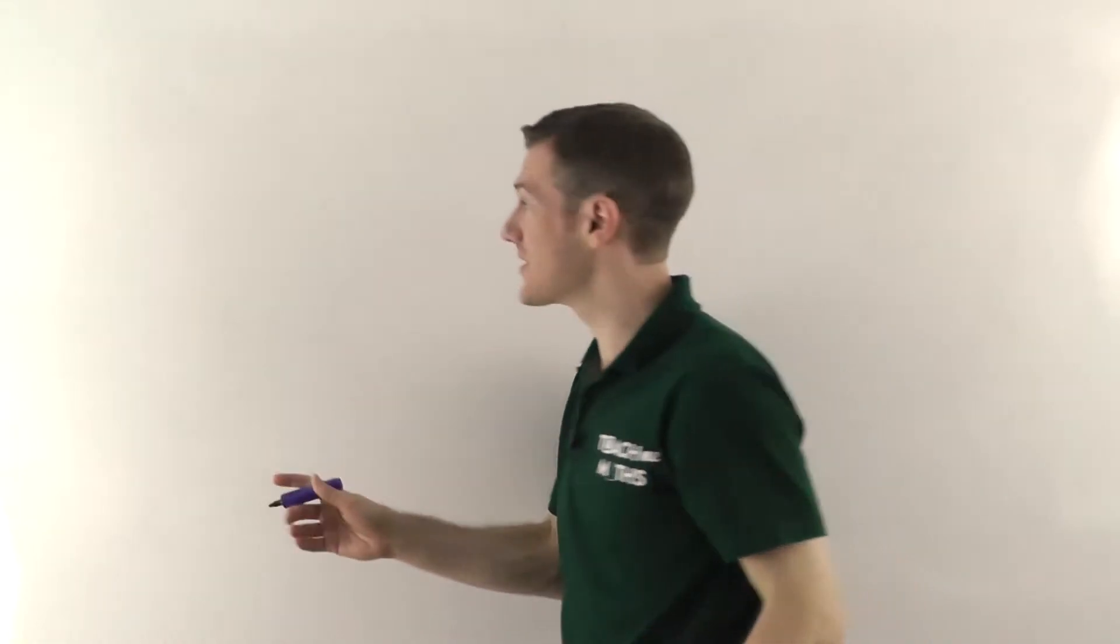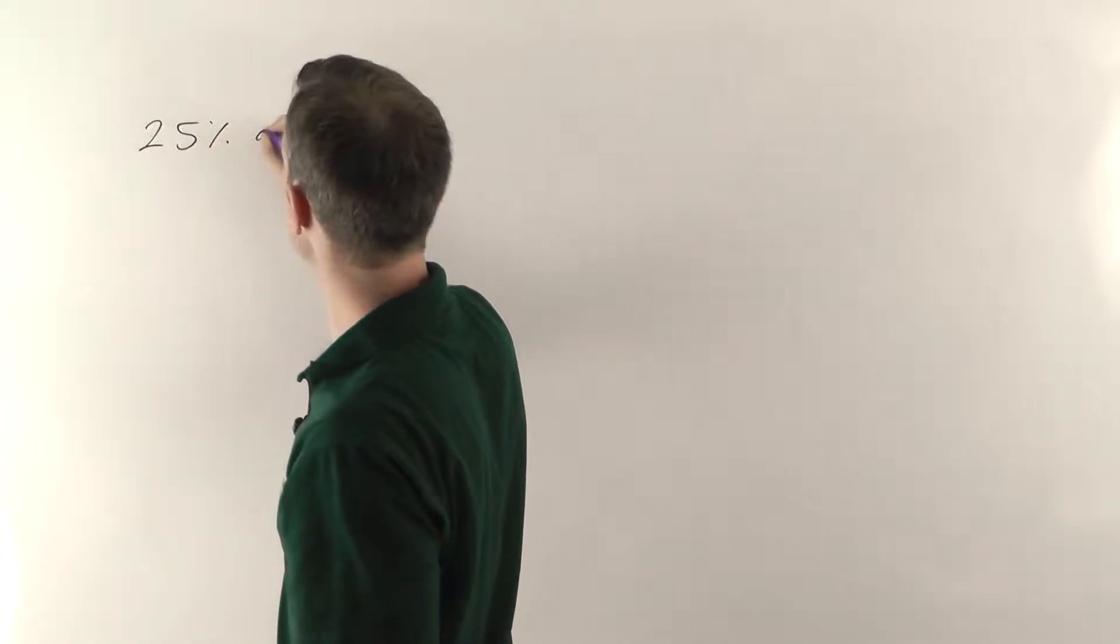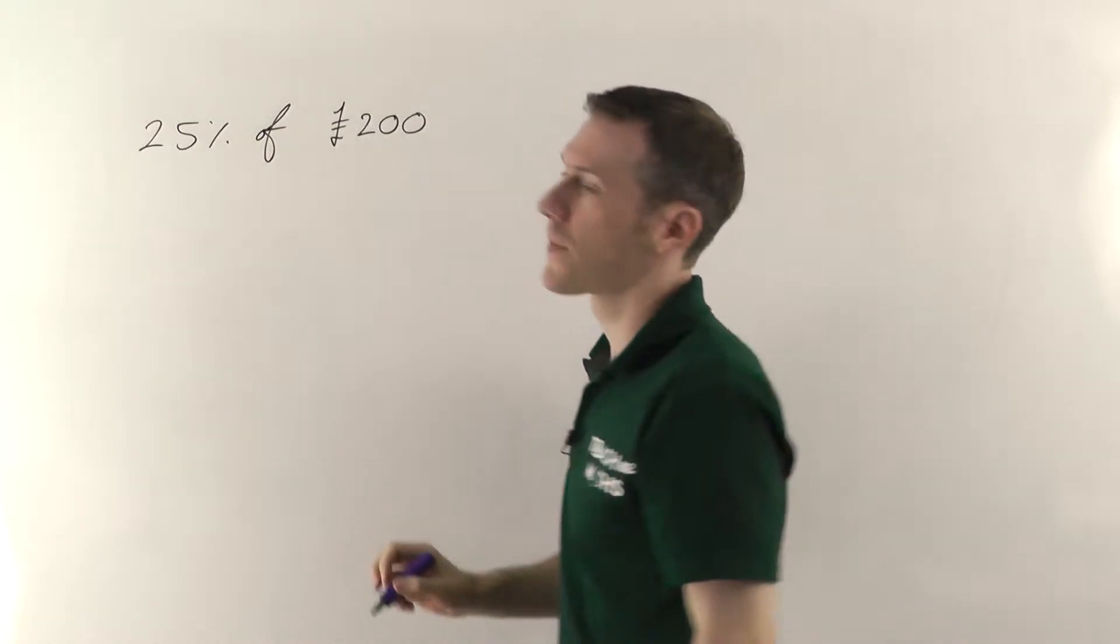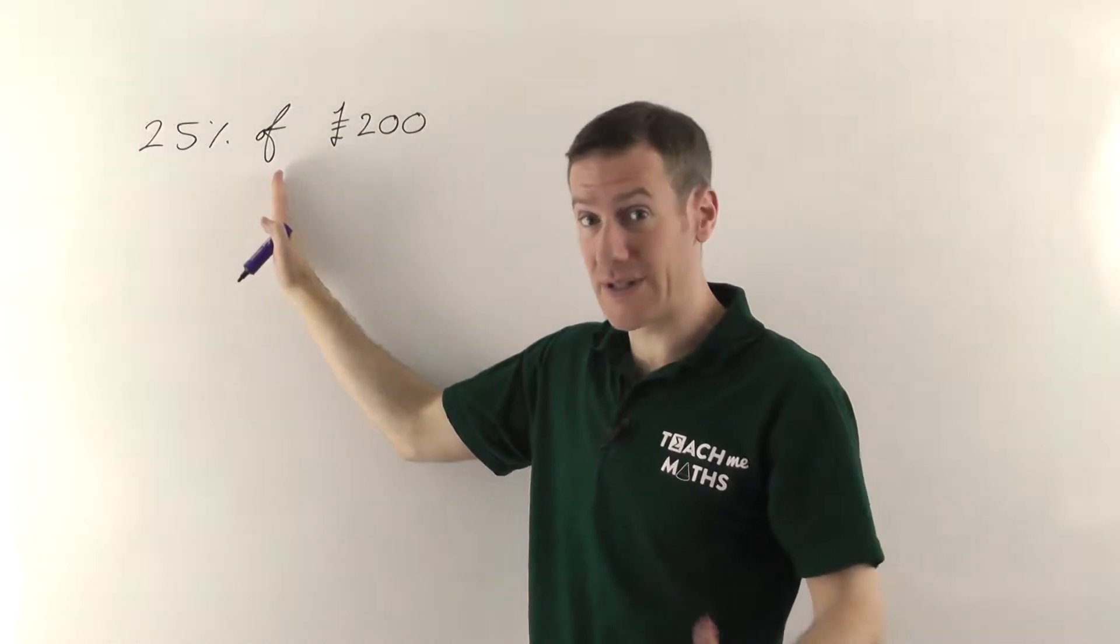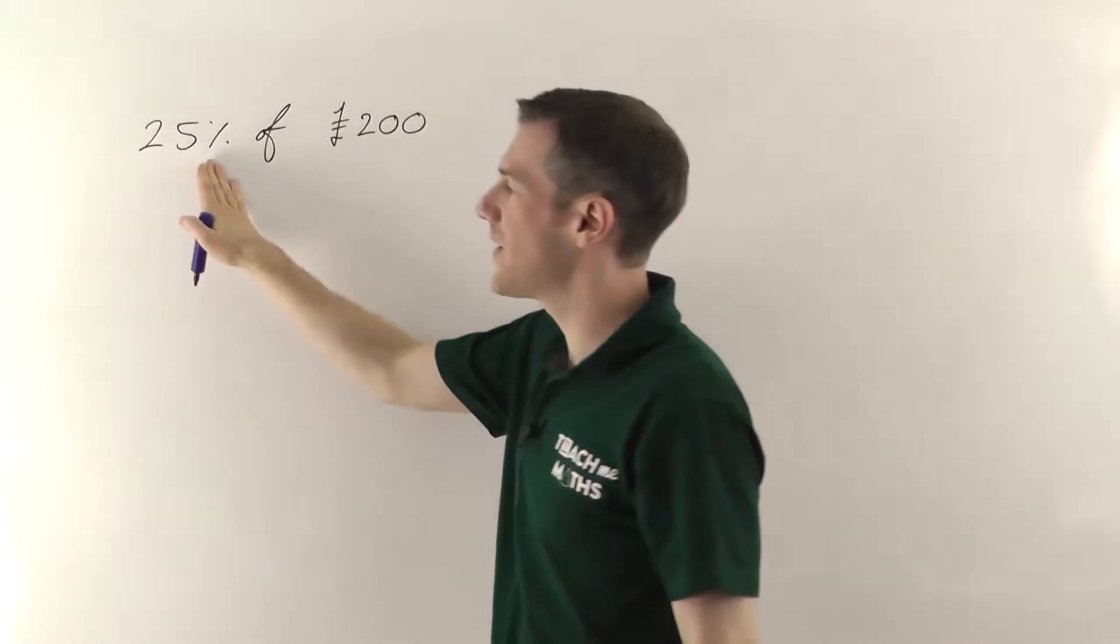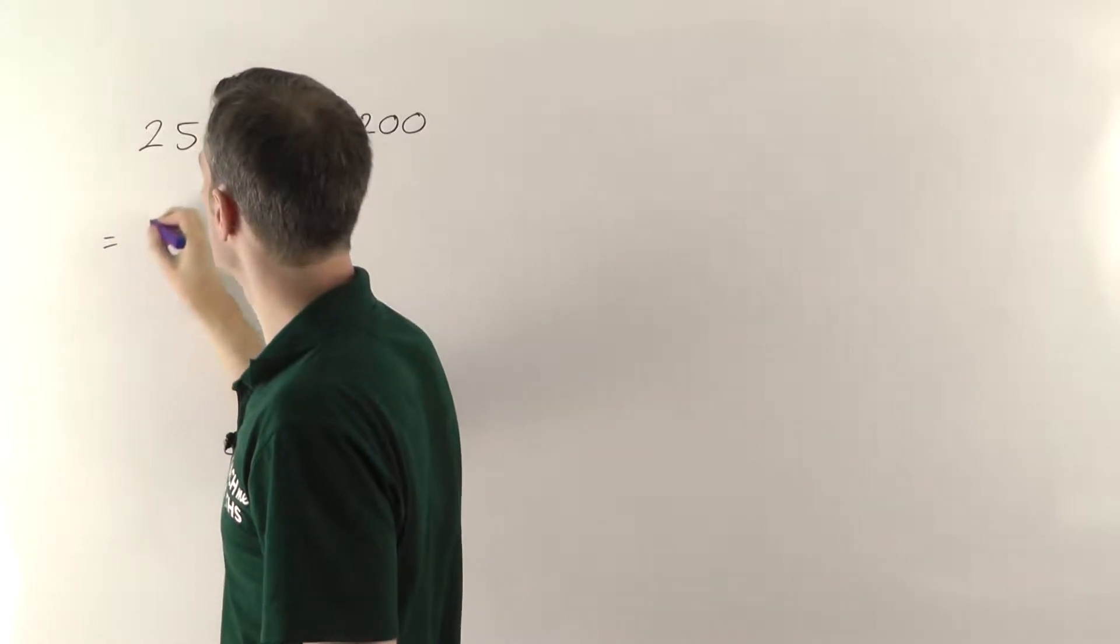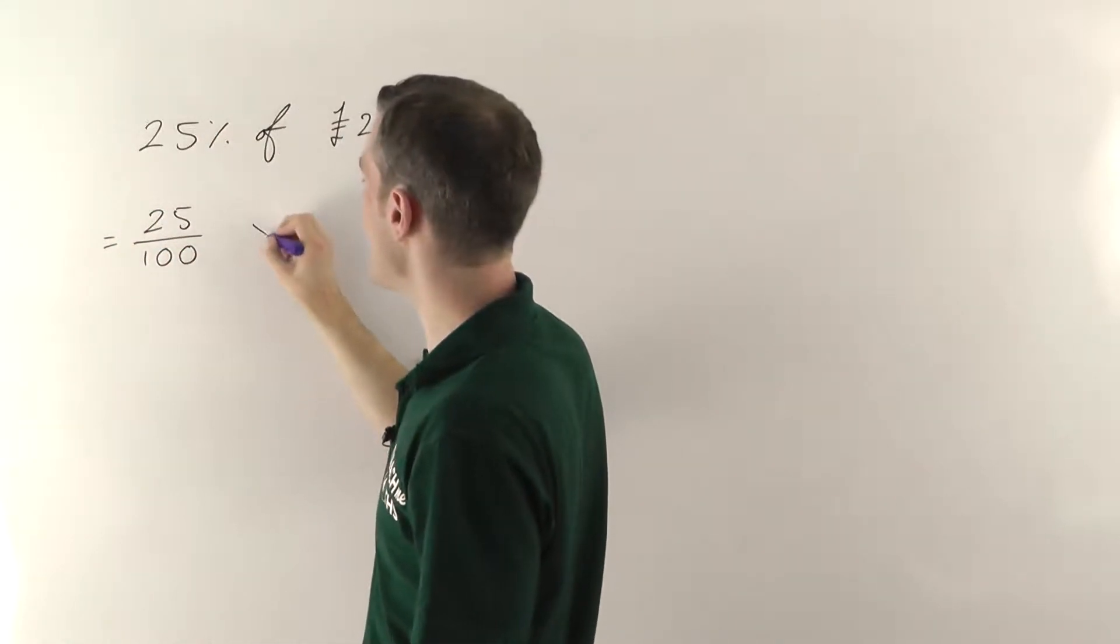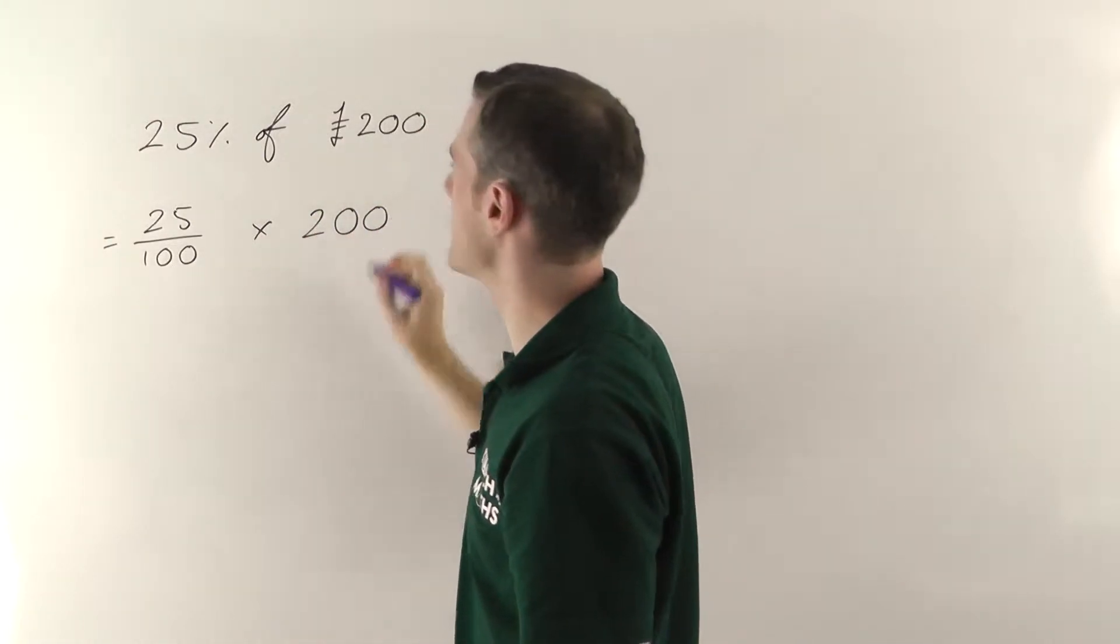All right, so I'll try a couple of examples. Imagine we need to find 25% of 200 pounds. So remember whenever you see of that always means times. And 25% as I say by definition is a fraction out of 100. So that's going to be 25 over 100 times the 200 pounds that we need to find the percentage of.